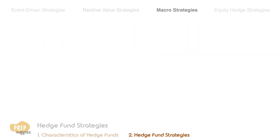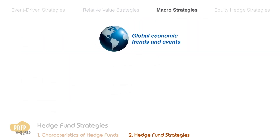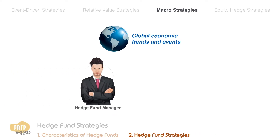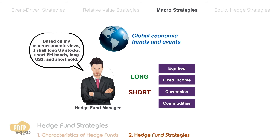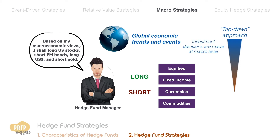Macro strategies are based on global economic trends and events. The hedge fund manager may take long or short positions in equities, fixed income, currencies, or commodities based on his view on overall market direction for each of these asset classes. Such strategies are said to have a top-down approach, as the investment decisions are made at the macro level.